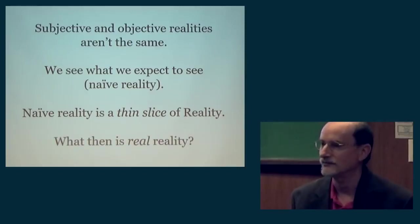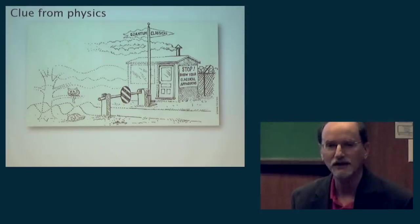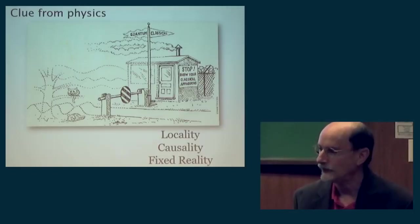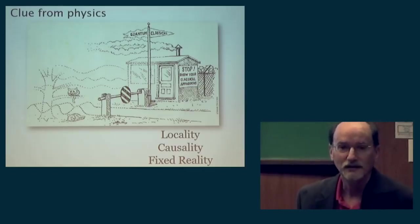So what is real reality? If our brains are tricking us all the time, how do we know what's real? There's a clue from physics, in the transition from the classical to the quantum world. From the classical perspective, we have locality, causality, a fixed reality, and space-time. These are all refinements of common sense.